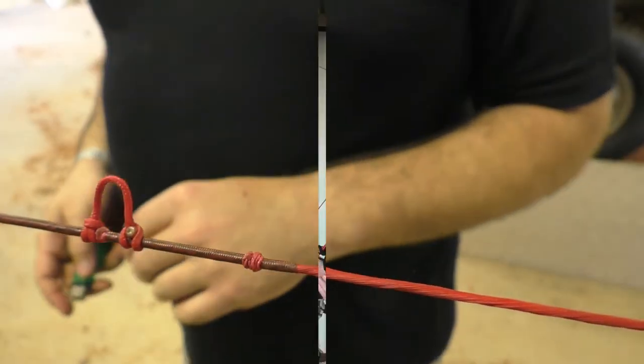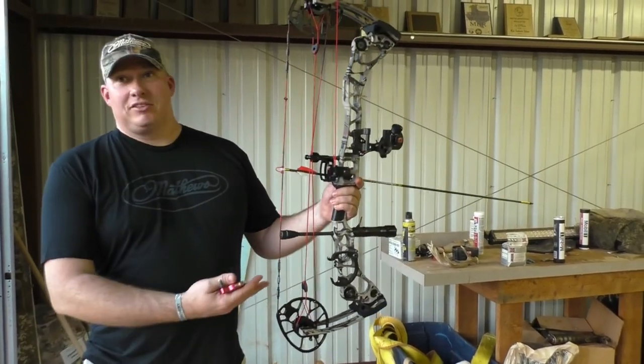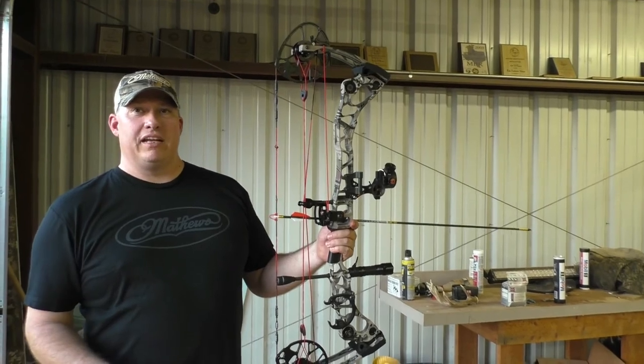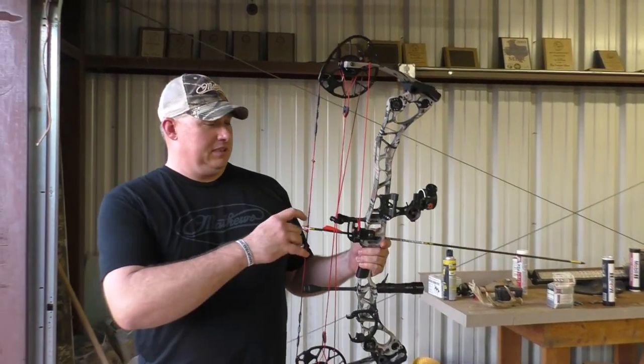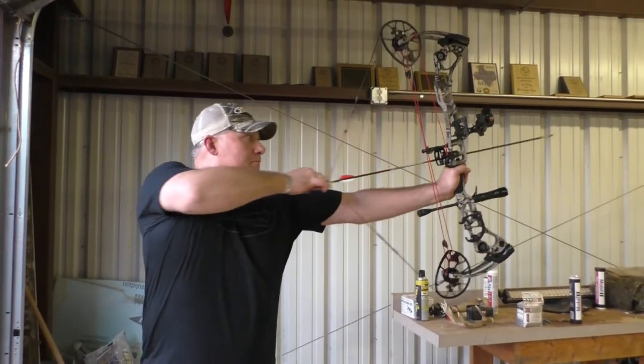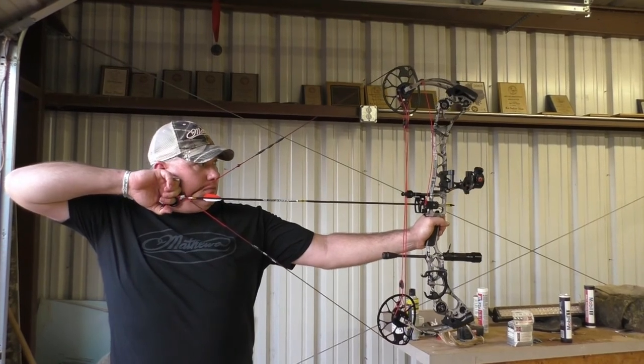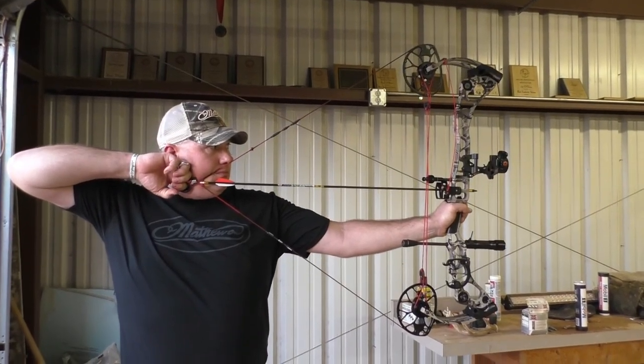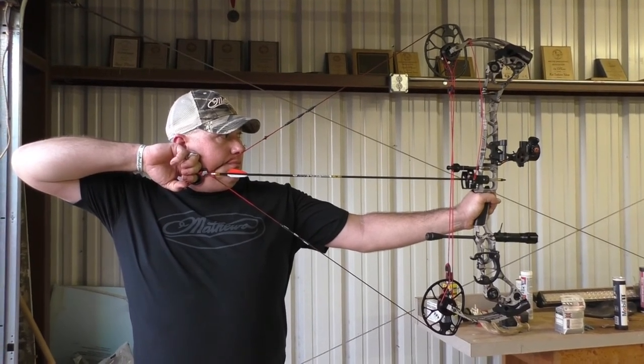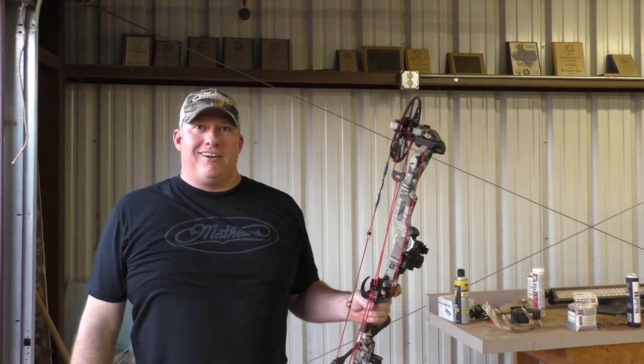Alright, now we get to shoot it. So we've got the strings changed. I like the way it looks a lot better with the red strings on it. It's a personal preference. Flow green, flow orange, whatever you like. Don't be afraid to customize your bow. Give us a shot and see how it works out. There you go. Shot alright.